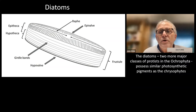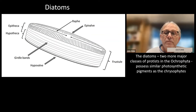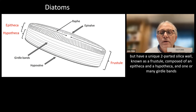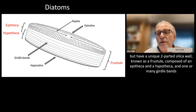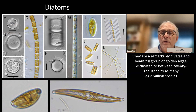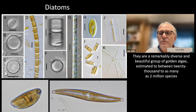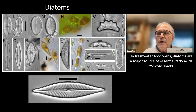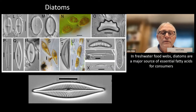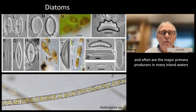The diatoms are two more major classes of protists in the Ochrophyta. They possess similar photosynthetic pigments as the chrysophytes, but have a unique two-parted silica wall known as a frustule, composed of an epitheca and a hypotheca and one or many girdle bands. They are a remarkably diverse and beautiful group, estimated at between 20,000 to as many as 2 million species. In freshwater food webs, diatoms are a major source of essential fatty acids for consumers, and often are the major primary producers in many inland waters.